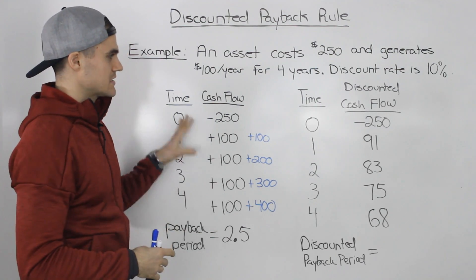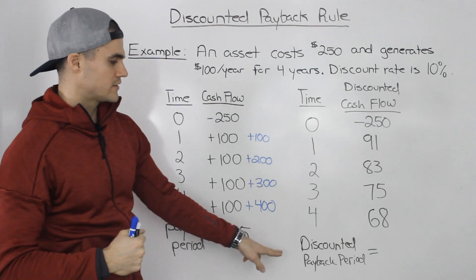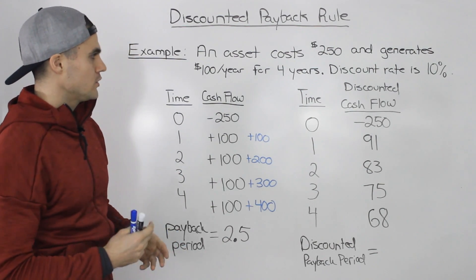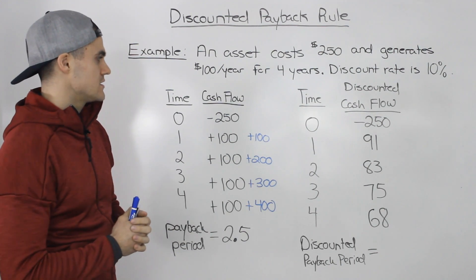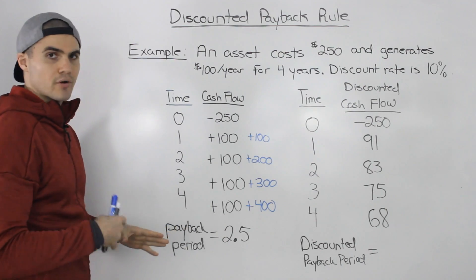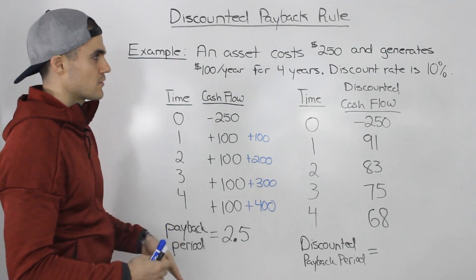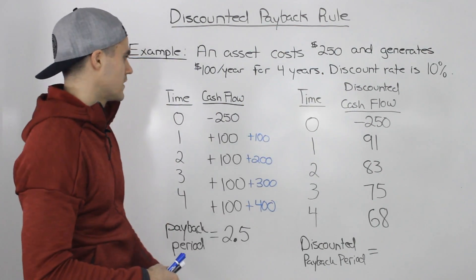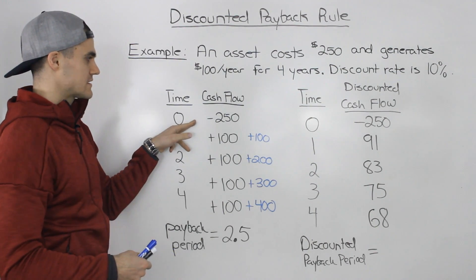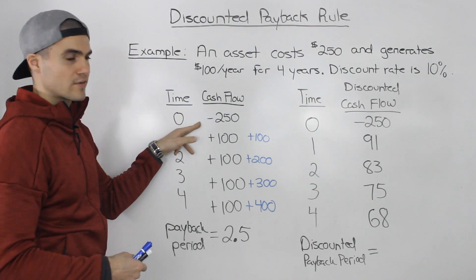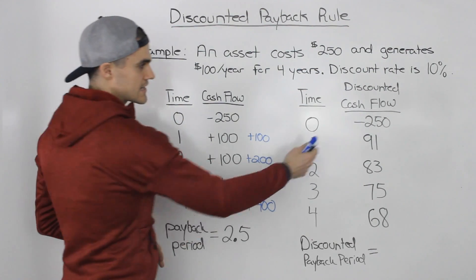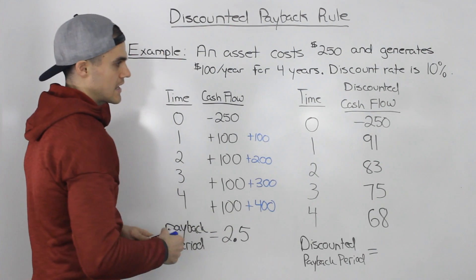Now let's take that same example and figure out the discounted payback period. What you do in this case is take all of the cash flows and present-value them to time zero using the discount rate. Starting with the time zero cash flow — the $250 investment — because it's already at time zero, discounting it to time zero just keeps it the same.